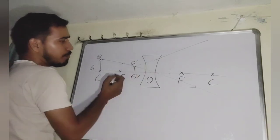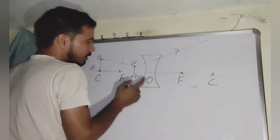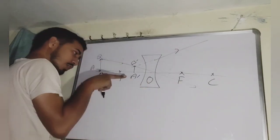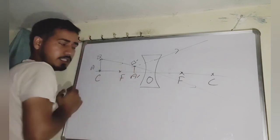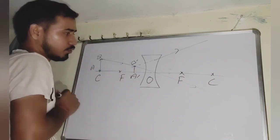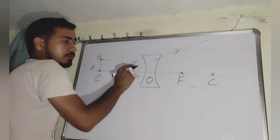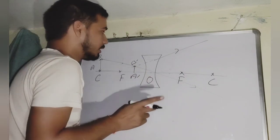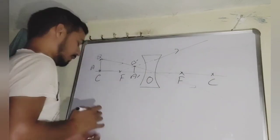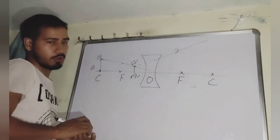The image A'B' is erect and is not obtained by actual intersection of the refracted rays, but by the extended path of the refracted rays. This is the virtual path of the refracted ray, so A'B' is a virtual image — it can never be obtained on a screen. This is all about image formation.